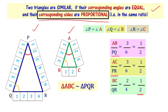Triangle ABC is similar to triangle PQR is confirmed — corresponding angles are equal and corresponding sides are proportional. The SAS criterion for similarity of triangles told us this, and now we have verified it by checking all conditions.